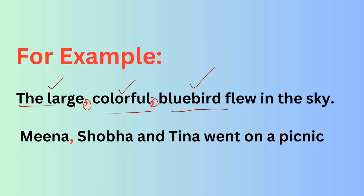Next example: 'Meena, Shobha and Tina went to the picnic.' Now, Meena, Shobha and Tina — these three are girls, meaning they are naming words. So we put commas in between them.